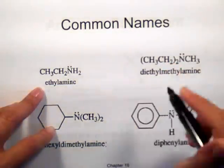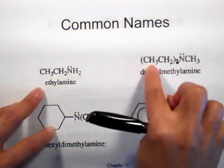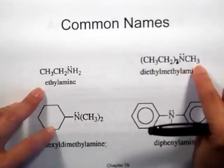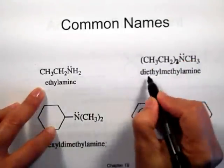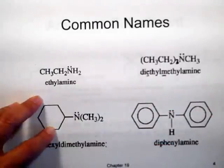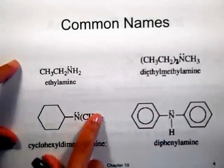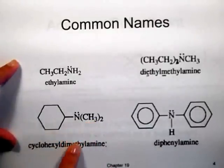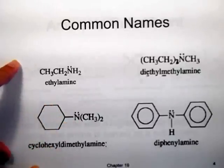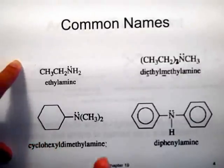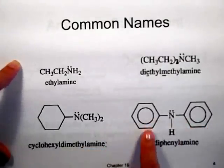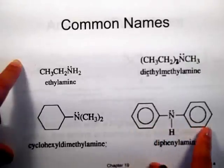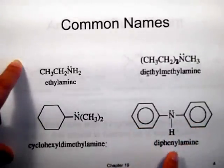Notice this one: I have two ethyl groups and also a methyl attached to the nitrogen. When giving the names of substituents, list them in alphabetical order, so this is diethylmethylamine. This one is a tertiary amine with two methyls and a cyclohexane attached to the nitrogen — we call it cyclohexyl with a Y and L because it's a substituent — so cyclohexyl dimethylamine. This one is a secondary amine with two phenyl groups attached to the nitrogen, so diphenylamine.